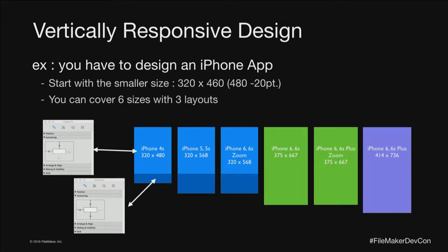To be more clear: let's say you have to design an iPhone app. My advice is to start with a smaller size - 320 points - and a square of 320 by 460, because I have 20 points of vertical margin. This expandable part can grow when you go from iPhone 4S to iPhone 5 or 6. So you have a fixed content - constant - and you have a variable part.